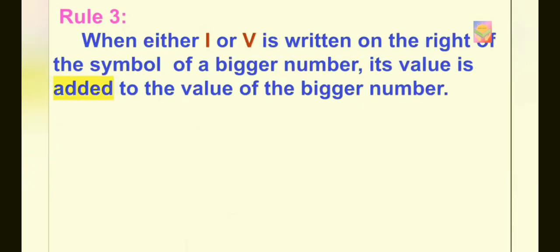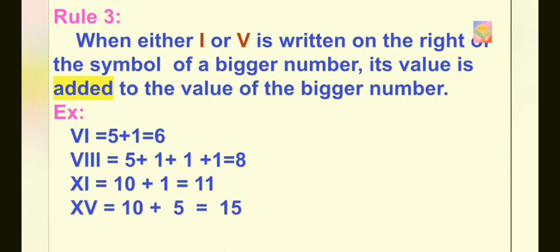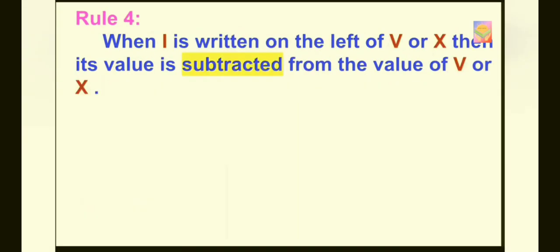Now let's move to rule number 3. When either I or V is written on the right of the symbol of a bigger number, its value is added to the value of the bigger number. For example, writing I on the right of V gives 5 plus 1 equals 6. Writing I three times on the right of V gives 8. Writing I on the right of X gives 10 plus 1 equals 11. Writing V to the right of X gives 10 plus 5 equals 15.